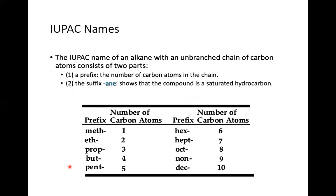The IUPAC name of an alkane with an unbranched chain of carbon atoms consists of two parts: a prefix indicating the number of carbon atoms in the chain, and a suffix indicating whether it is a saturated or unsaturated hydrocarbon. The various prefixes correspond to the number of carbons.